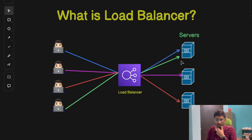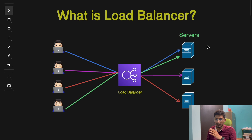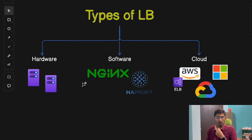A load balancer works the same way — it's a tool that distributes incoming traffic across multiple servers so that no single server gets overwhelmed. In tech terms, it's like a traffic controller where requests are directed evenly and efficiently to a pool of servers. Without a load balancer, all requests go to a single server, flooding it, which can cause delays and even crashes. But with load balancing, traffic gets spread out, which boosts performance, reliability, and overall user experience.